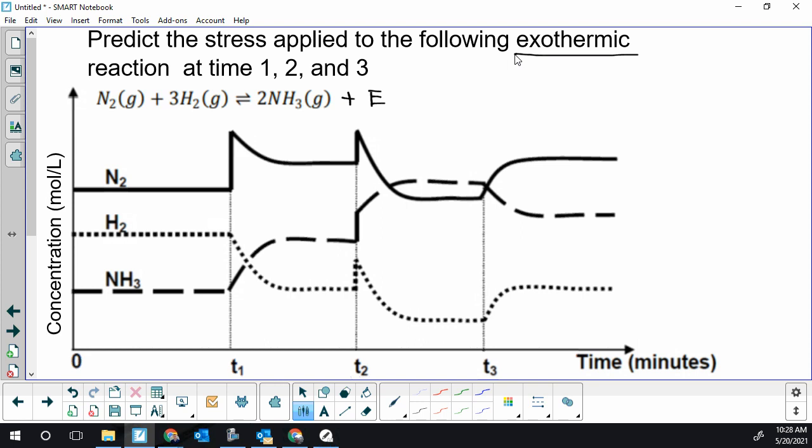At time 1 we see one spike. One spike is indicative of concentration changes. So at time 1 we have nitrogen gas added. It's nitrogen gas because that's the chemical that's spiked and it is a spike up, so that means it's an addition.